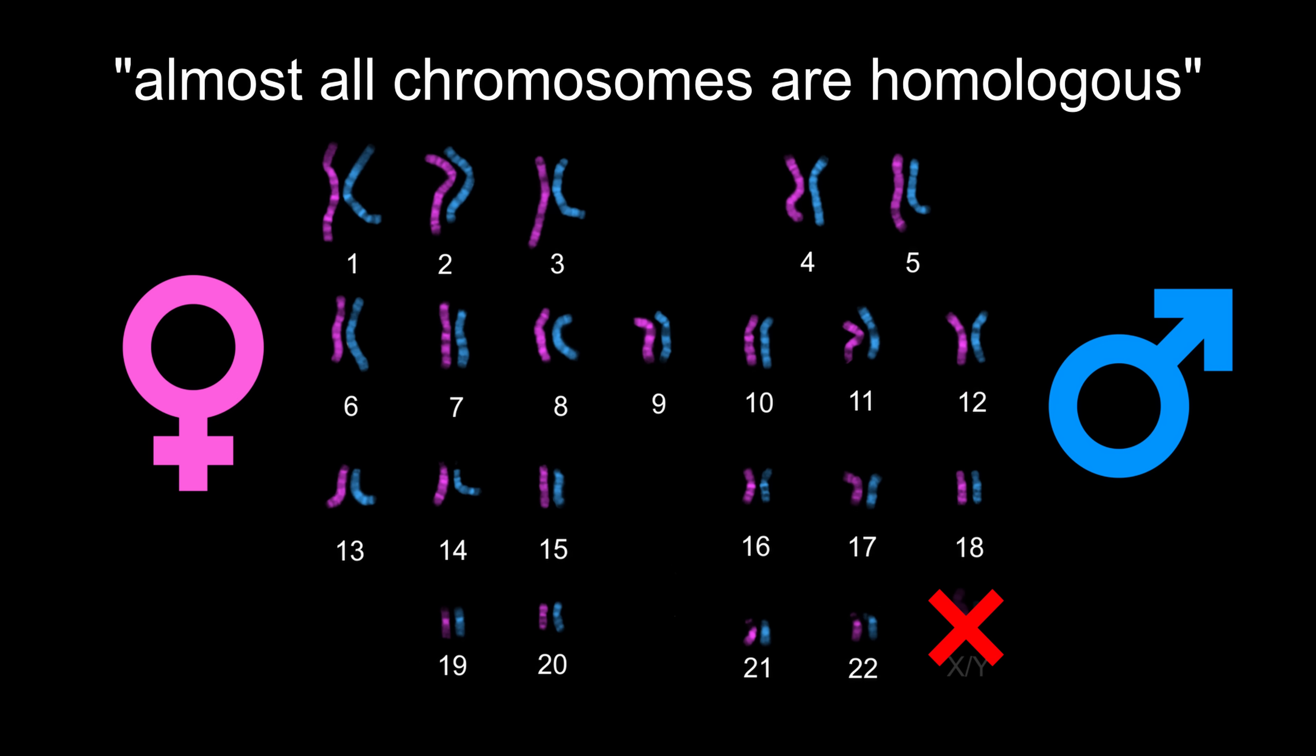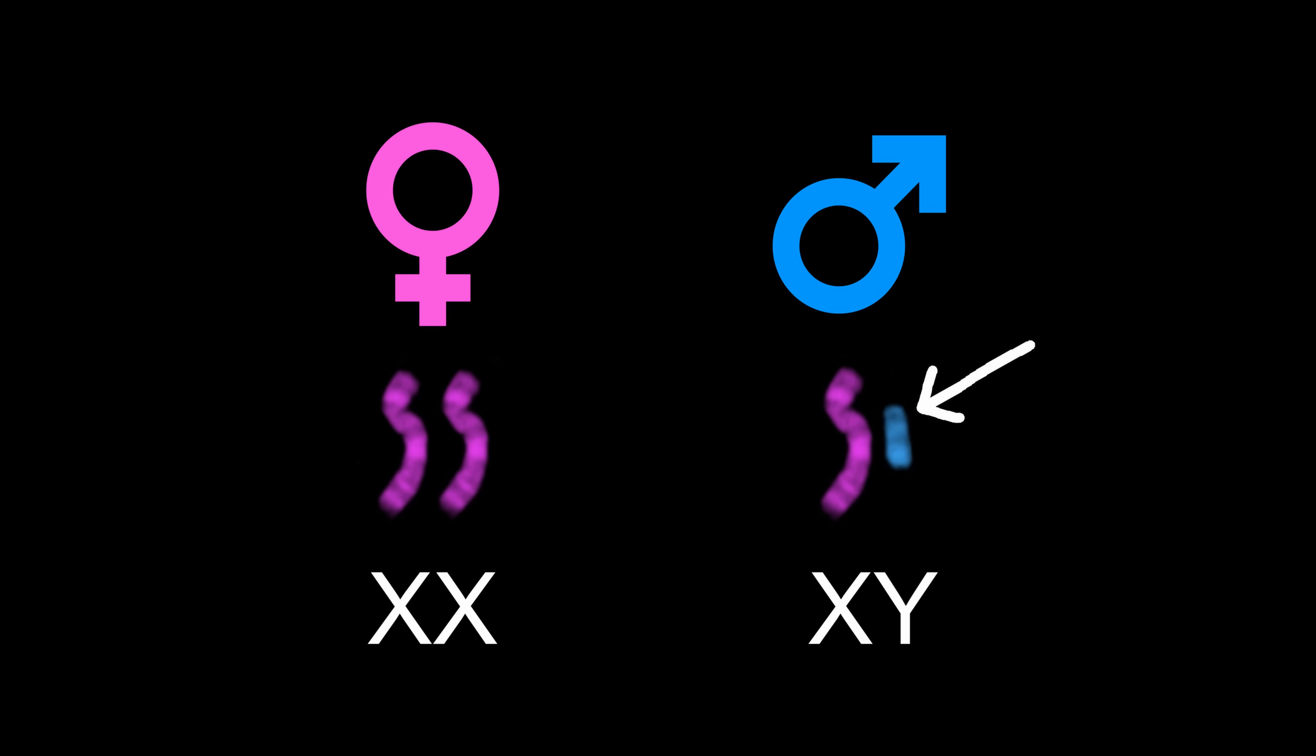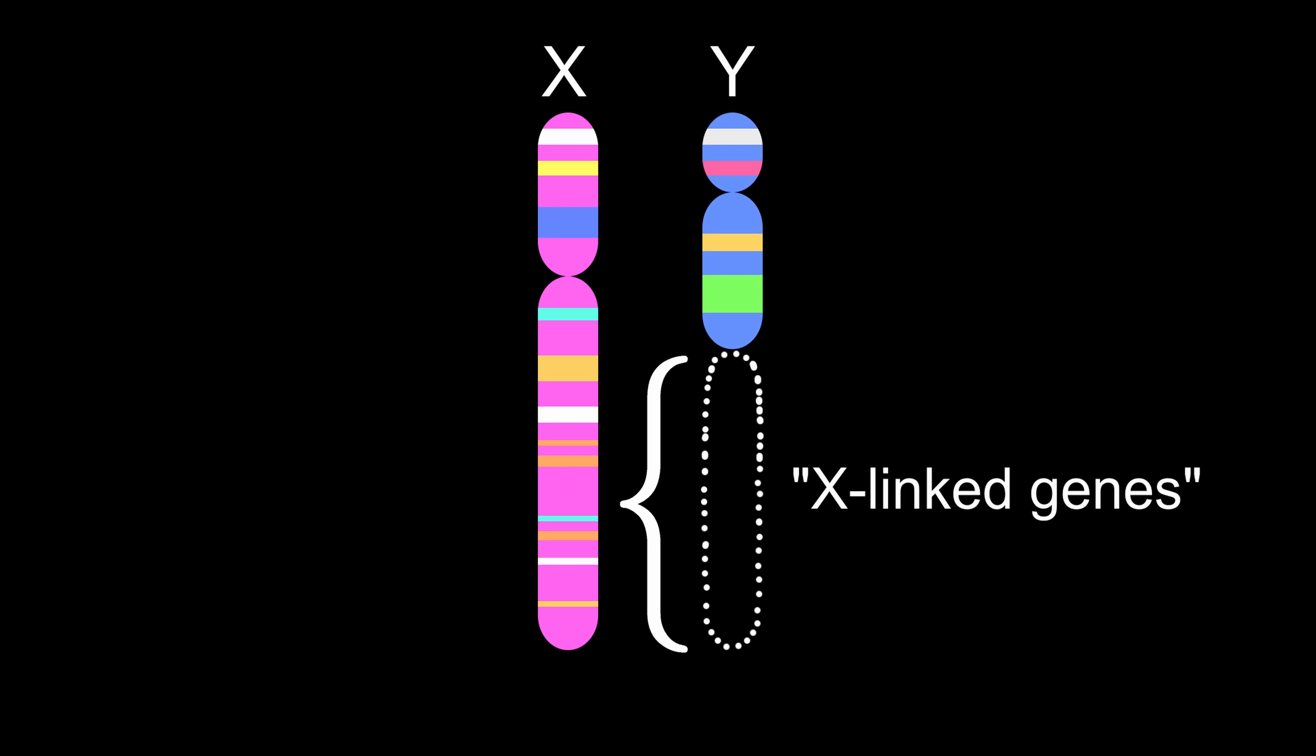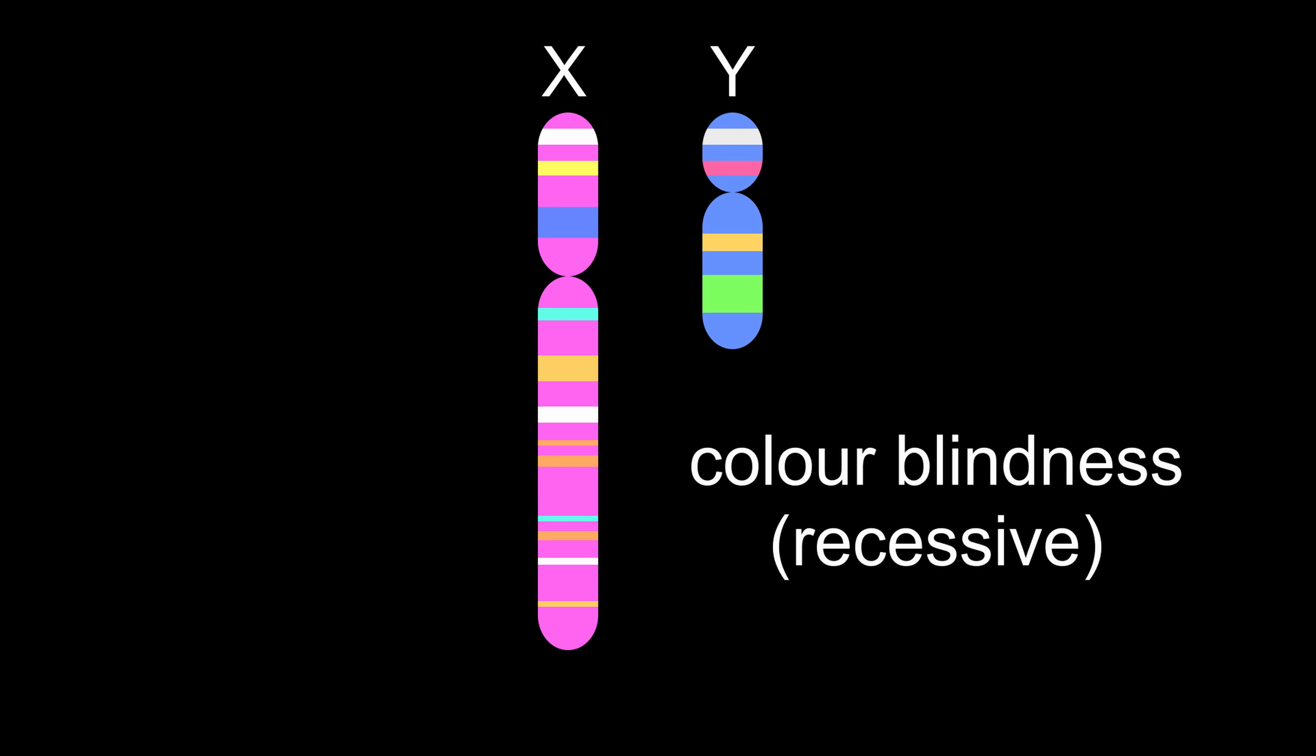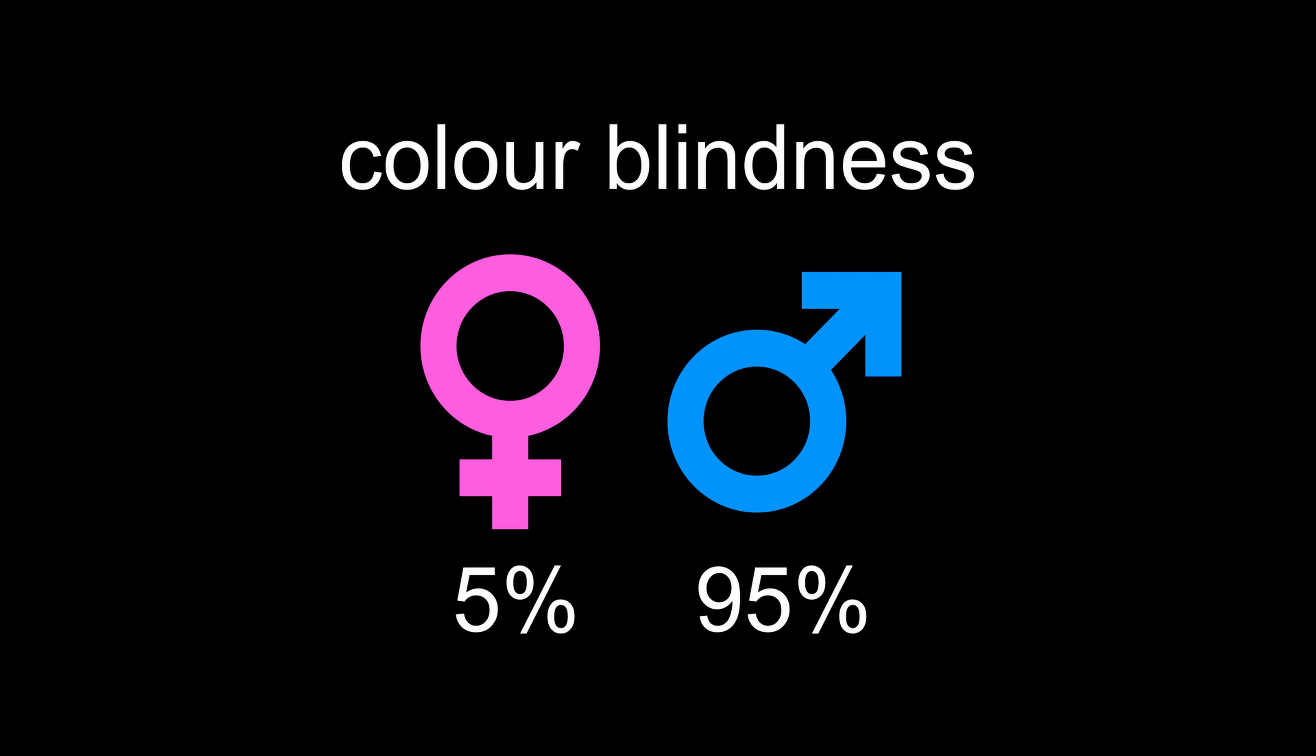Hey, remember how I said that almost all chromosomes are homologous? Well, there's one exception, the sex chromosomes. Females have two big X chromosomes, whereas males have one X and one smaller Y chromosome. These are partially homologous at the top, but since the Y chromosome is so small, it's missing genes that are present on the lower part of the X chromosome. These genes are called X-linked genes. If one of these genes is a recessive trait like colorblindness, males are stuck with that trait, whereas females probably have another dominant allele to override it. This is why most colorblind people are male.